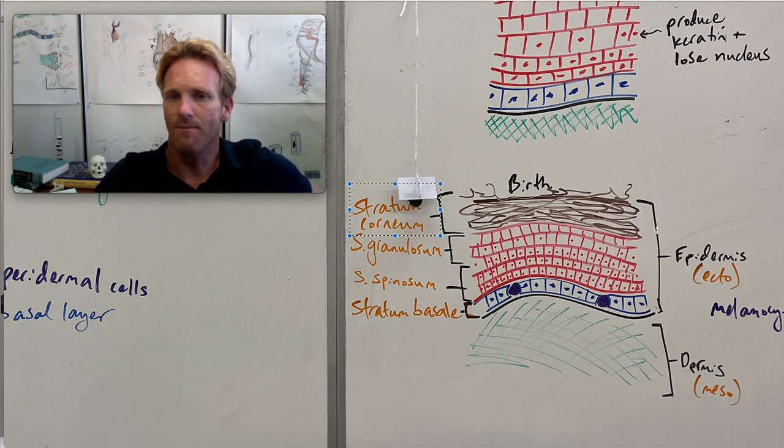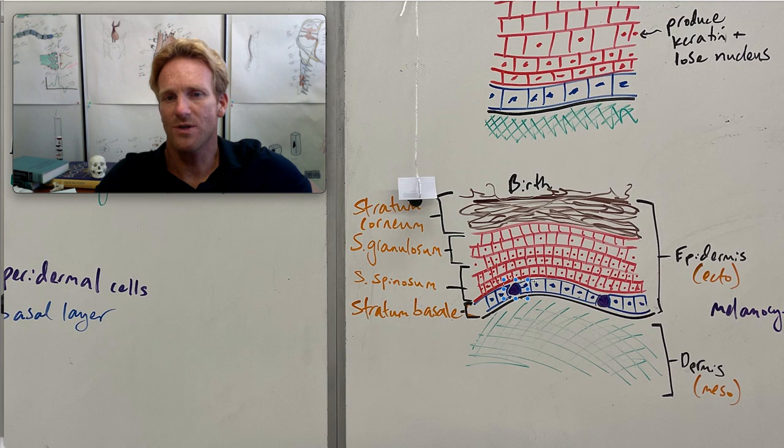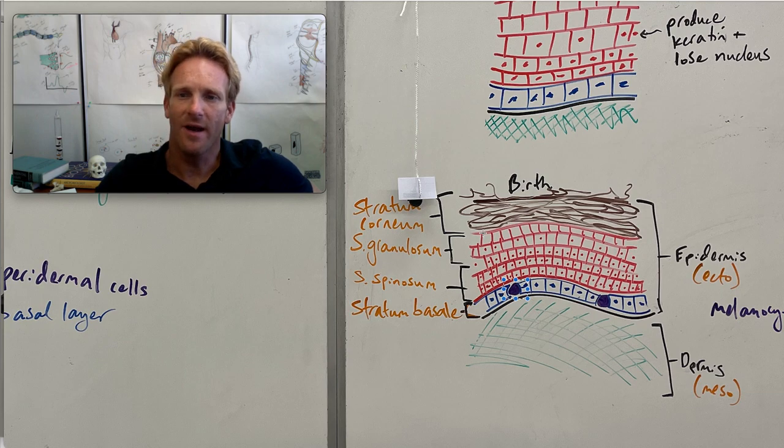Also in the stratum basale you're going to have a couple of melanocytes. That's what these little purple cells represent. These cells are really important because they produce melanin, which is a pigment that is deposited on top of the nuclei of these young keratinocytes in the stratum spinosum. That melanin will help protect the nuclei of these keratinocytes from ultraviolet light, and this gives skin its color.